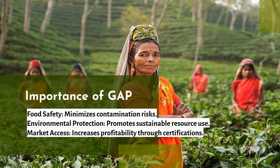Now, what is the importance of GAP? The importance of GAP cannot be overstated. First, it ensures the production of safe food by minimizing contamination risk. Second, it helps in protecting natural resources like soil, water, and biodiversity, and ensures long-term sustainability, helping in protecting the environment. Lastly, by adhering to GAP, farmers can gain access to high-value international markets and improve their profitability and competitiveness. So market access is what GAP will provide them.